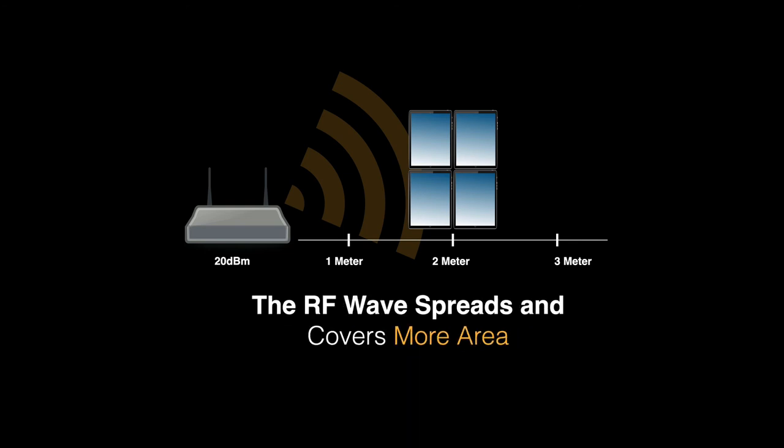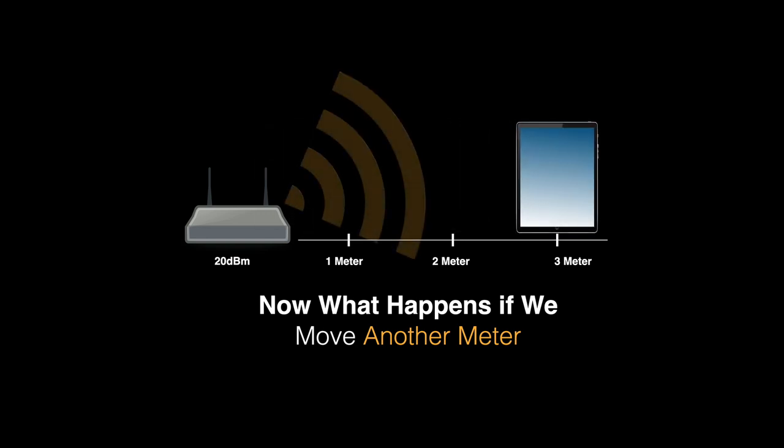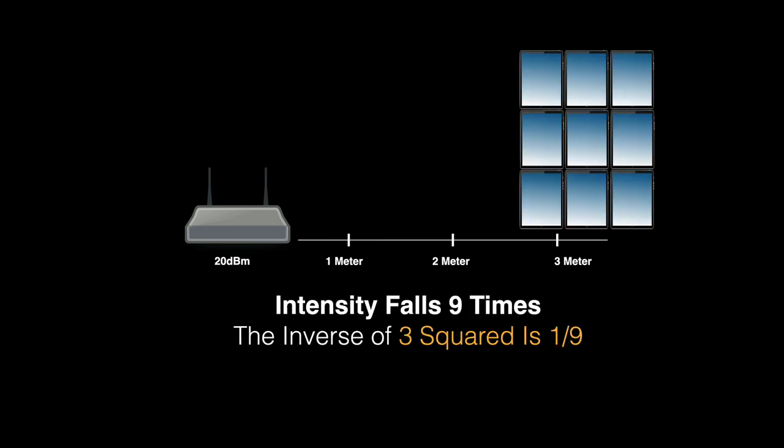The RF wave actually spreads and covers much more area. And now, what happens if we move another meter, that is 3 meters from the wireless router. So now the intensity actually falls 9 times.